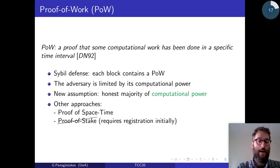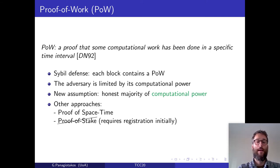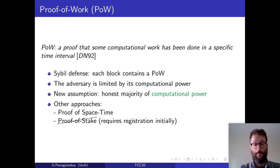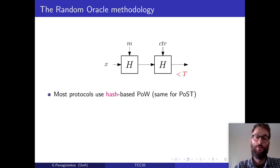There have also been other approaches, for example the use of proofs of spacetime, which require disk space. It should be noted that in this discussion we do not involve protocols that use proof-of-stake, because they require an initial registration phase. Most blockchain protocols use hash-based proofs of work, and the same holds for proofs of spacetime.